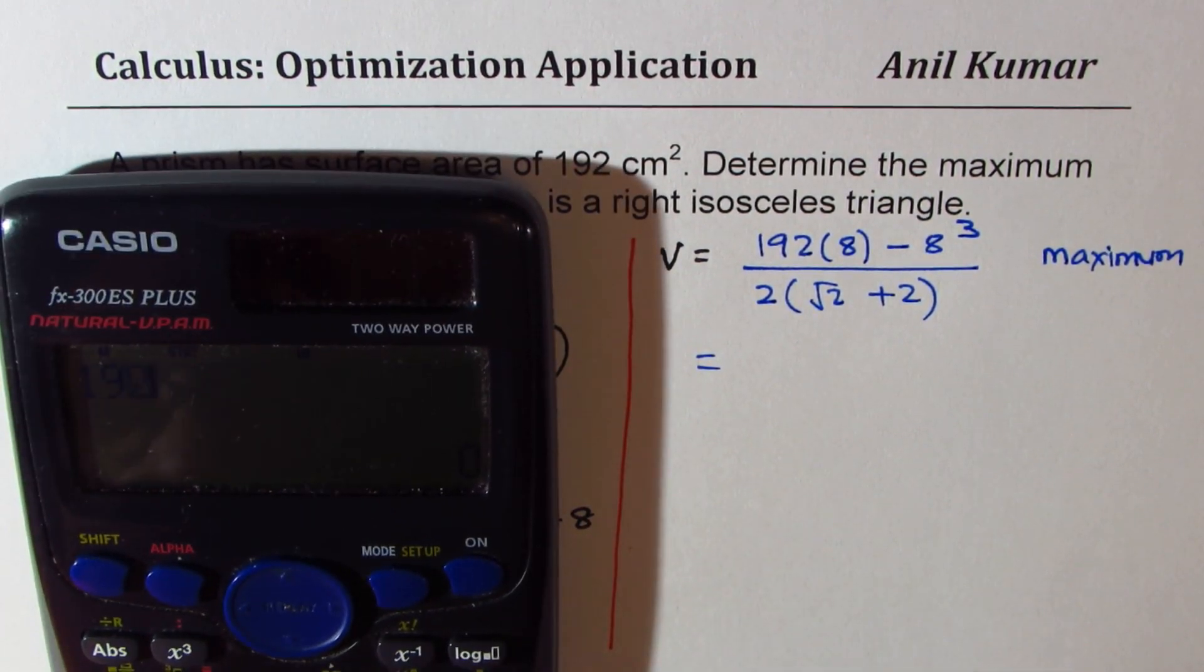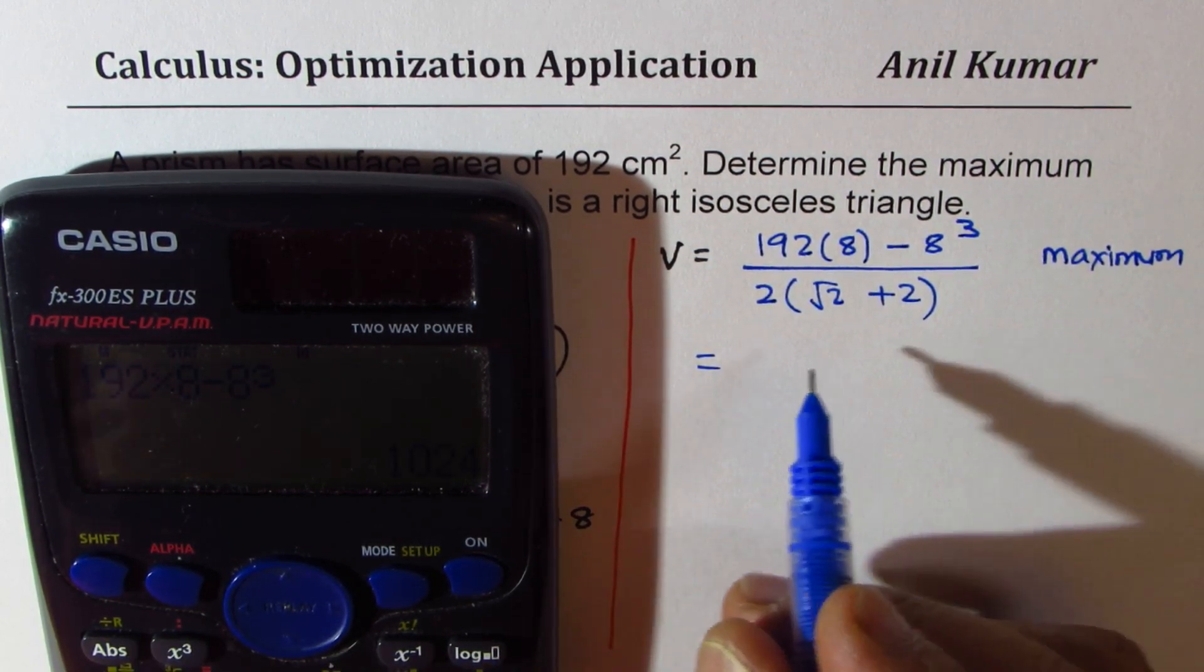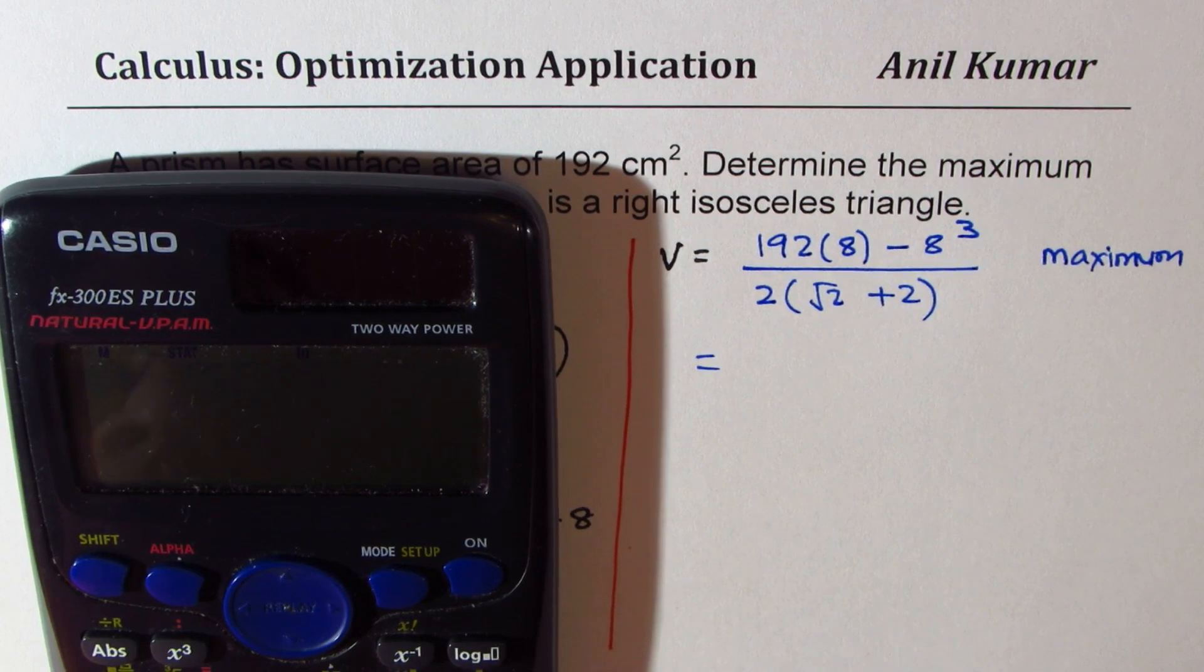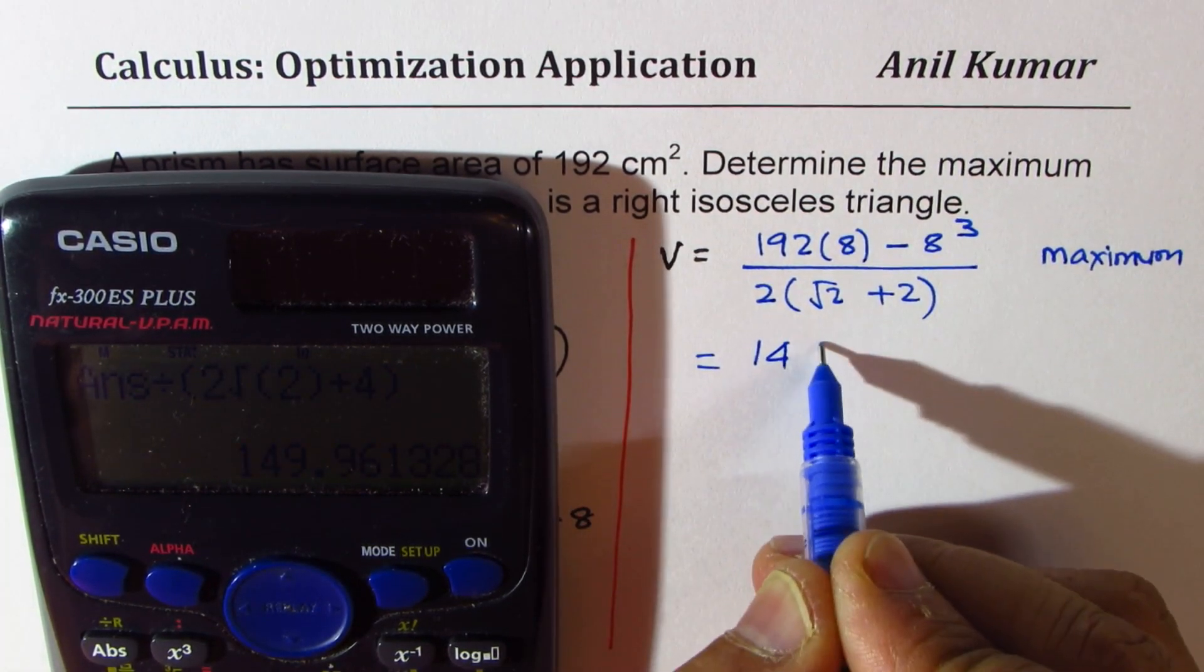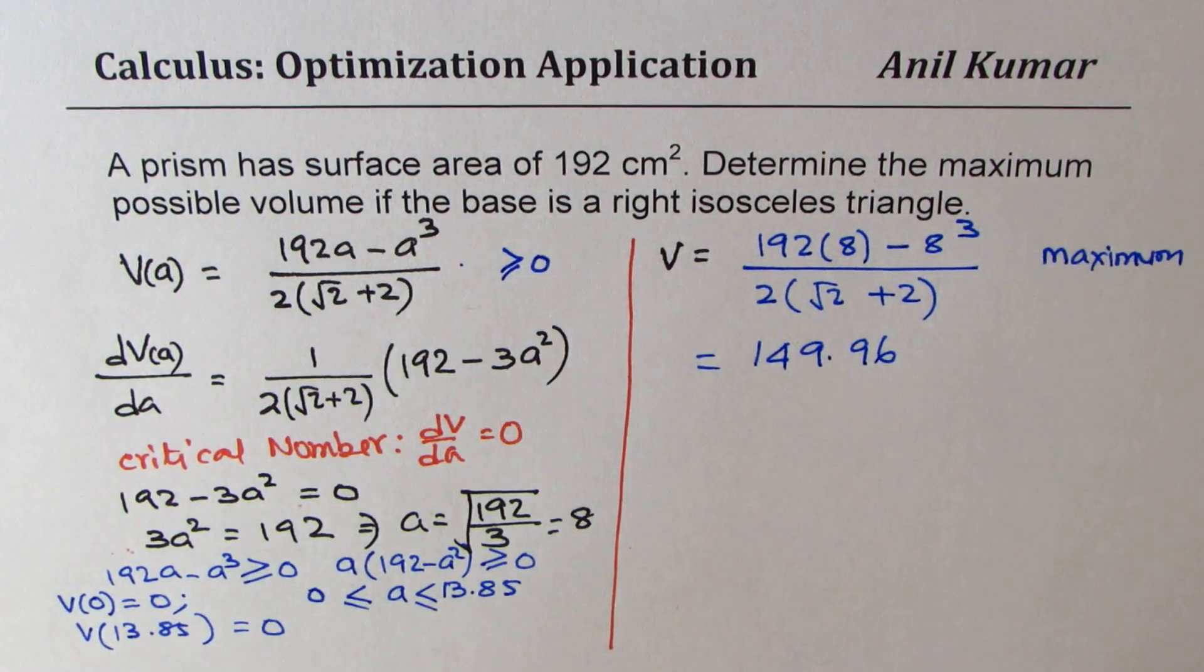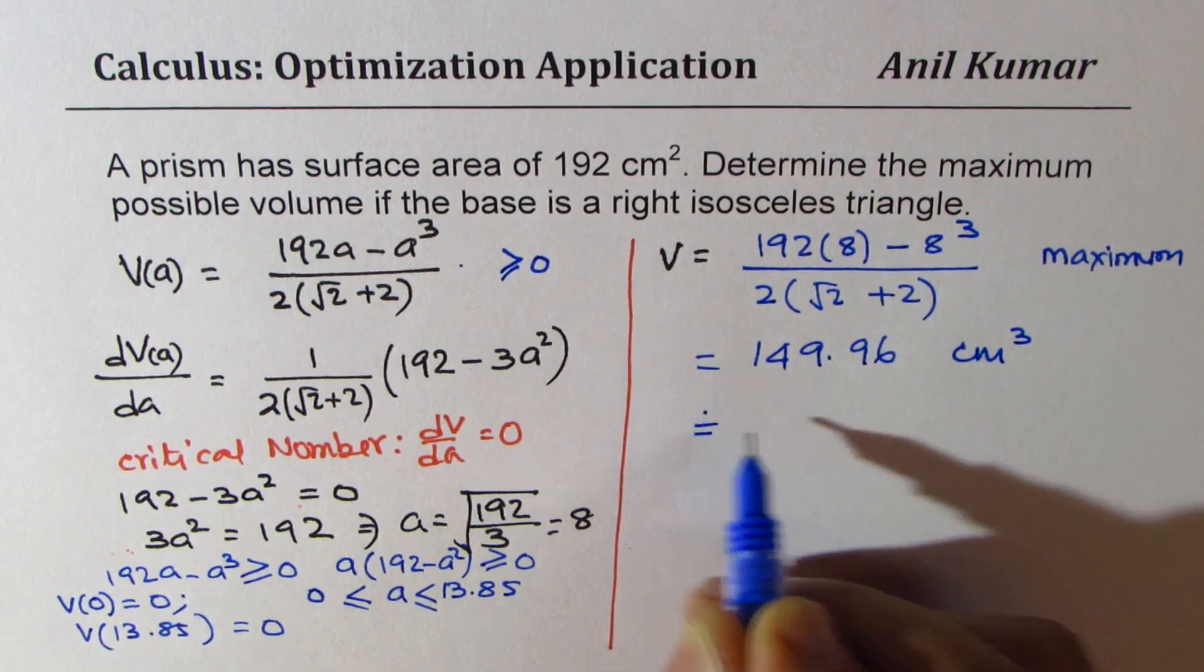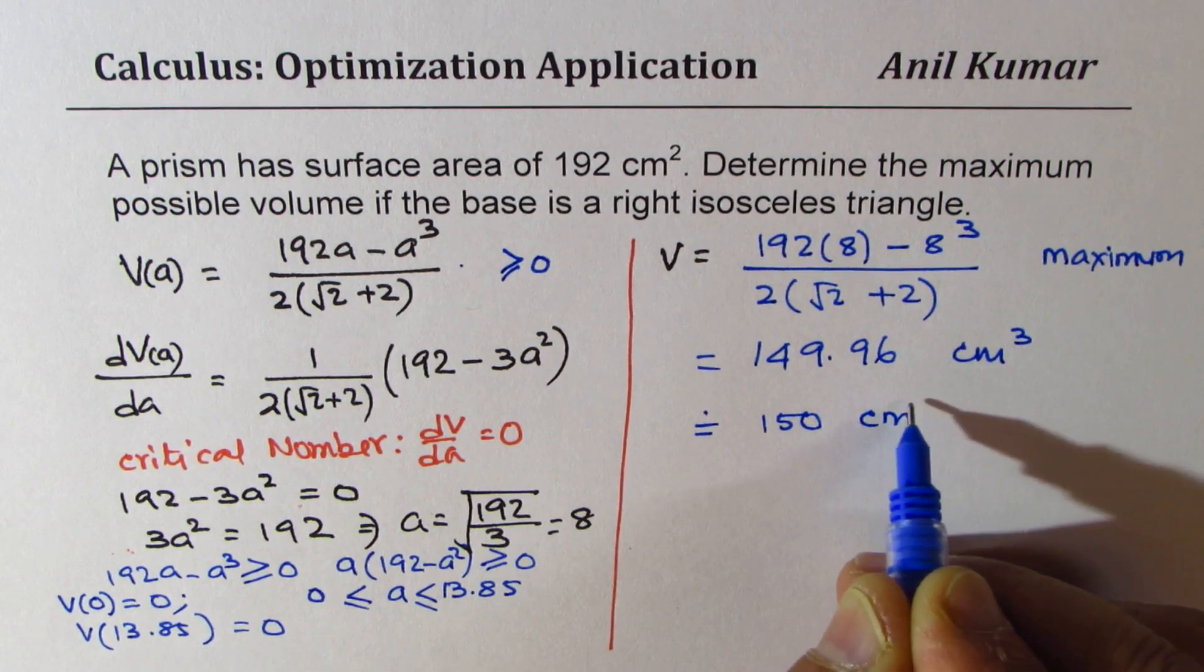So we have 192 times 8 minus 8 cubed, 1024. And we are going to divide this by 2 square root 2, let's put them in bracket, 2 square root 2 plus 4, bracket close, equals to. And we get a value which is 149.96. So that's the value we get. Units of centimeters, so it will be volume will be centimeter cube. And this can be approximated to 150 centimeter cube.